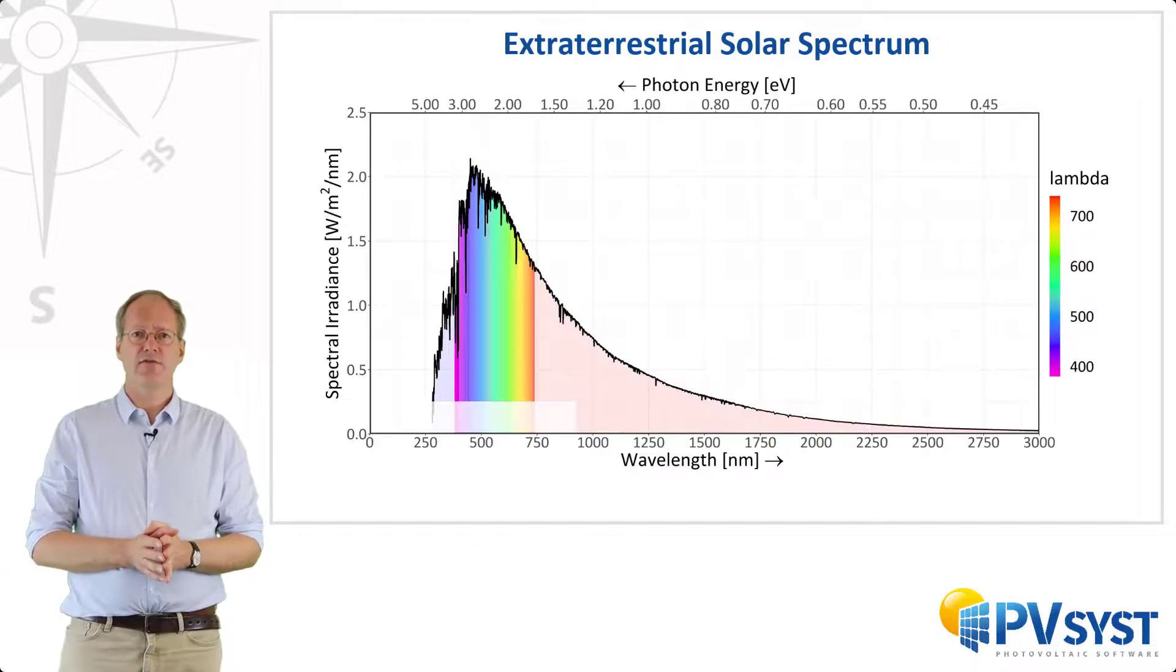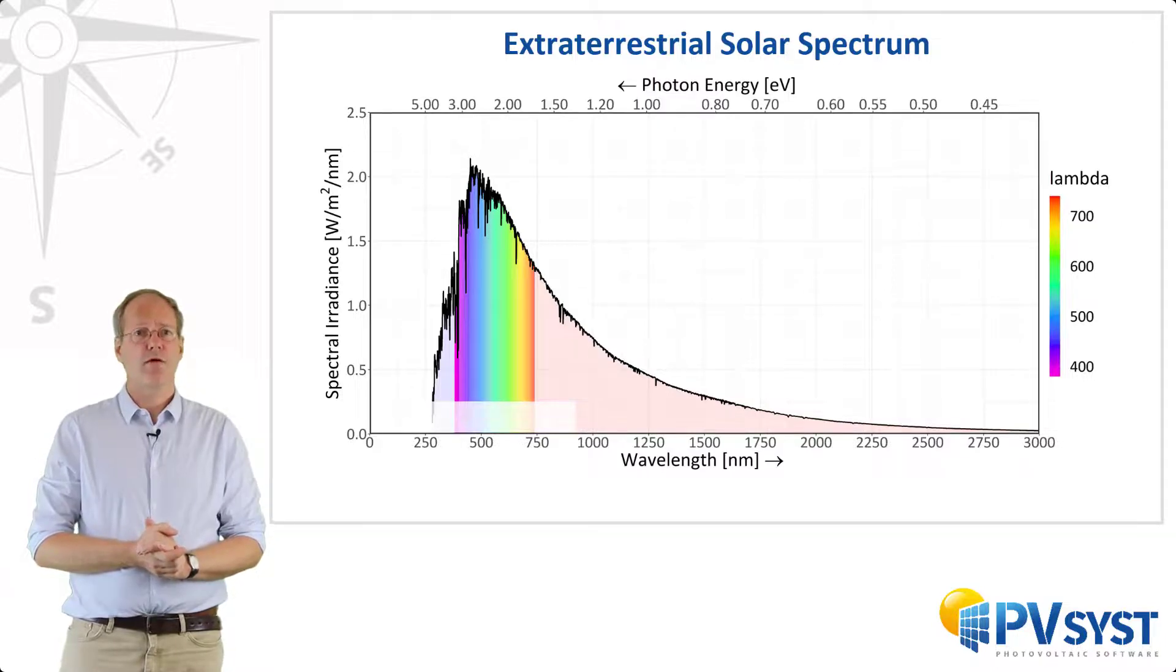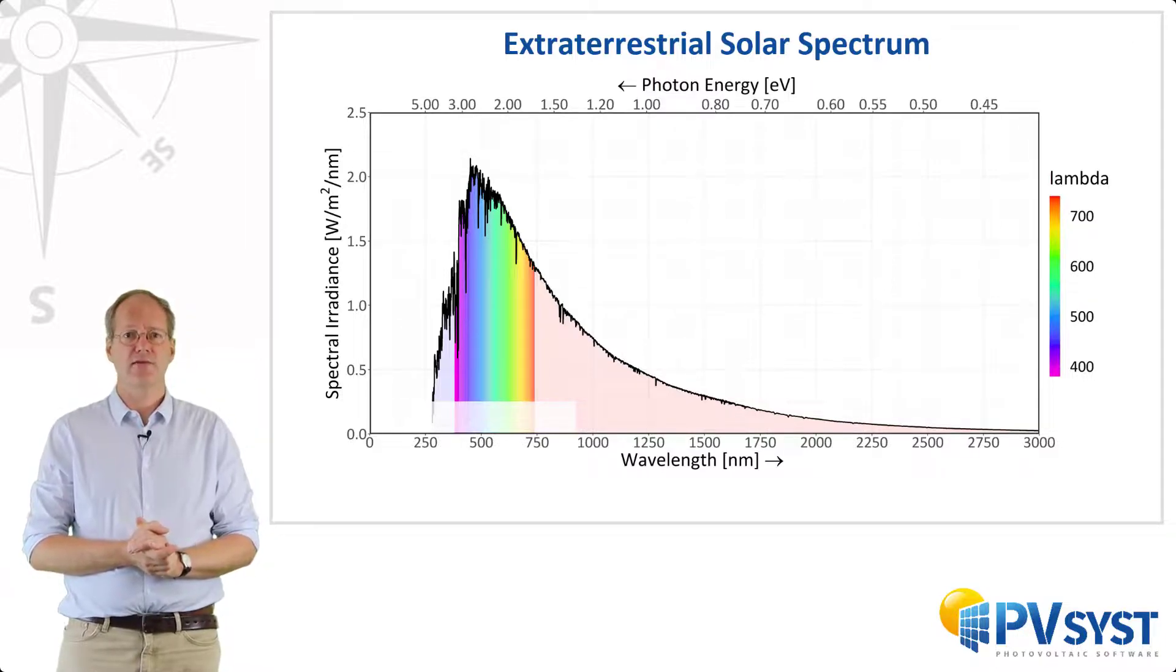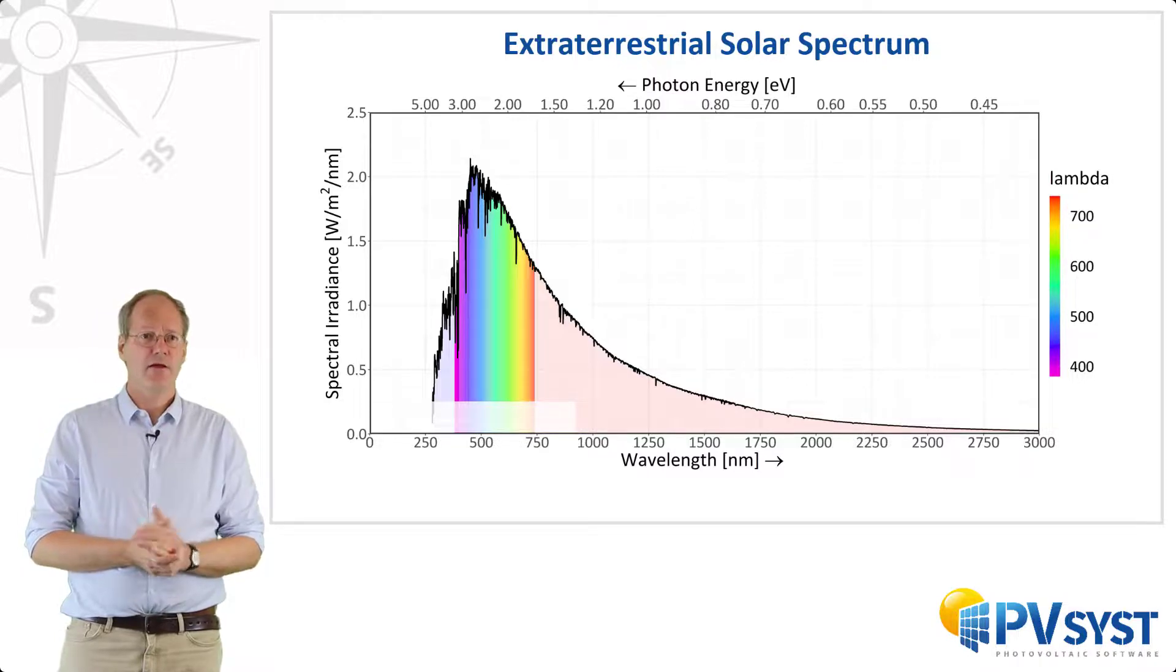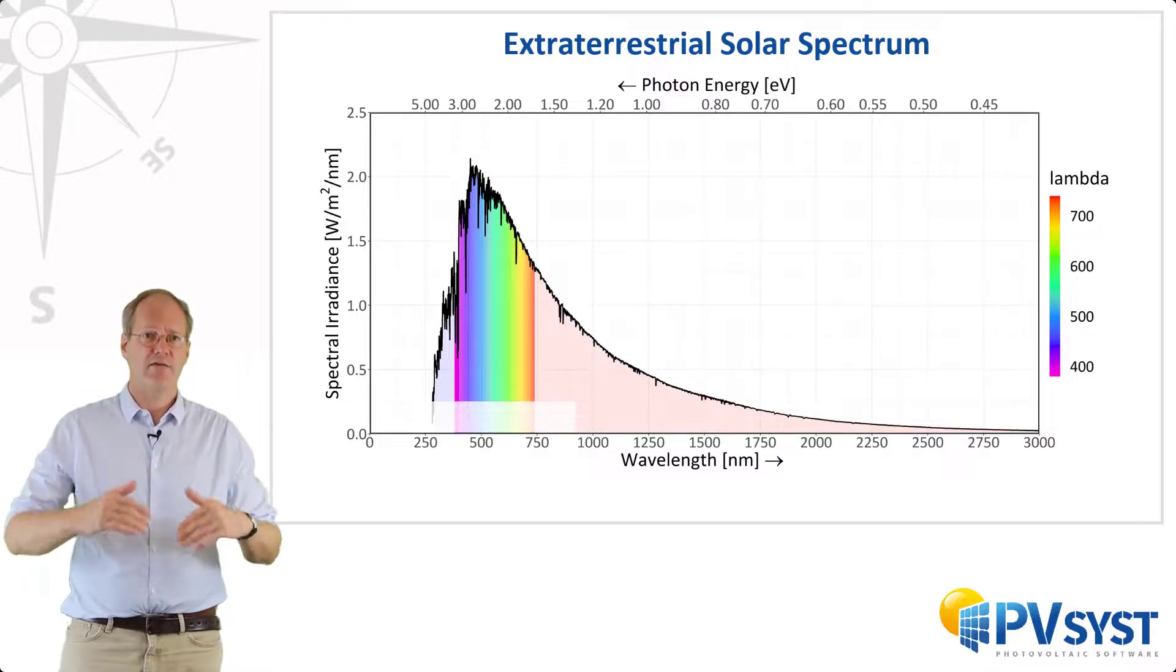Here you can see the solar spectrum that is available just outside our atmosphere. We call this the extraterrestrial spectrum. On the x-axis, we have wavelength, and on the y-axis, the spectral irradiance. Spectral irradiance refers to the individual contribution of each wavelength to the total irradiance. The total irradiance is the area under the curve.